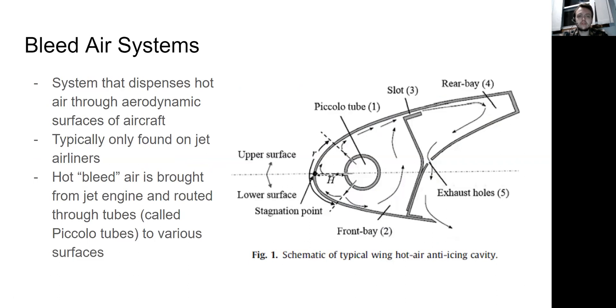Bleed air systems are systems that dispense hot air through aerodynamic surfaces of the aircraft. So as you can see here, this is a leading edge of a wing right here. Hot air comes through this piccolo tube. Usually on a jet airliner, it'll take the bleed air from the jet turbine and run it through the piccolo tubes along the wings. And then it gets exhausted through the exhaust holes. Hot bleed air is brought from the jet engine and routed through the tubes. So as a result of this, you can't really create this system on a propeller-driven aircraft, but jet engines obviously have a lot of heat buildup. And this heat can be extracted and sent through to the aerodynamic surfaces of the airplane and warm up those surfaces to prevent ice buildup. So this is actually an anti-icing system.